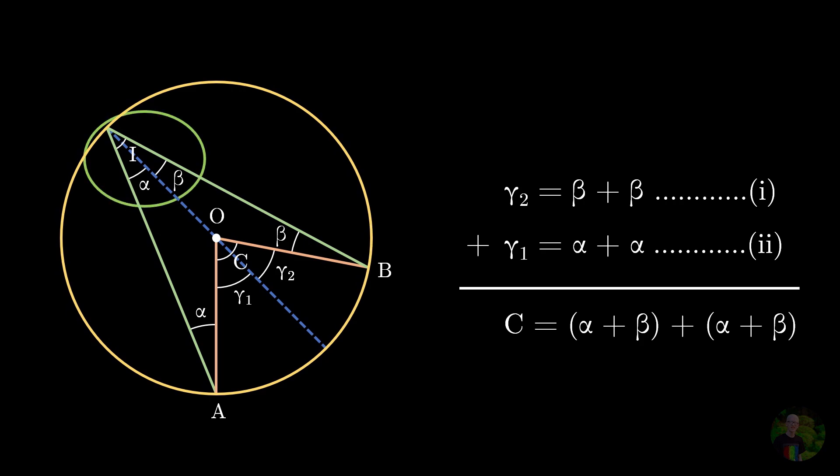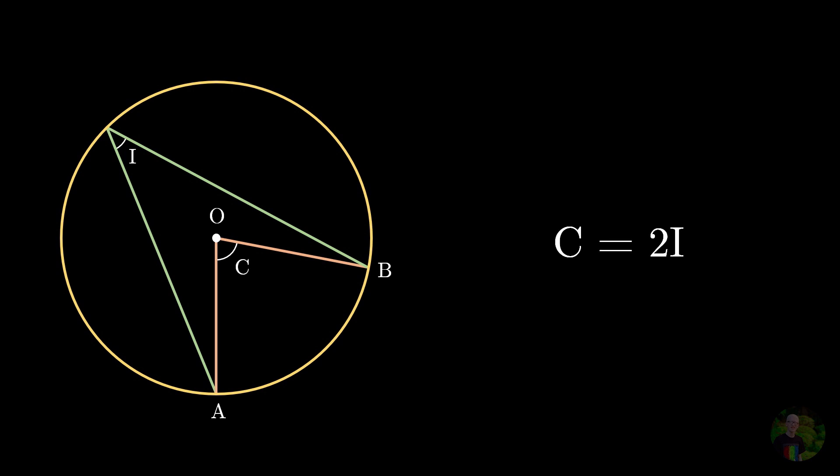And from this part of the figure, we get to know that alpha and beta sum up to become that inscribed angle. So, we will replace alpha plus beta with I as the inscribed angle. And after adding those, we proved that the central angle is 2 times the inscribed angle standing on the same arc. This also implies that the inscribed angle is half of the central angle also standing on the same arc.